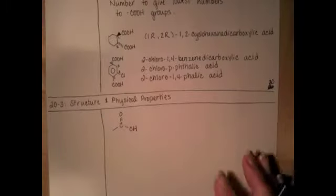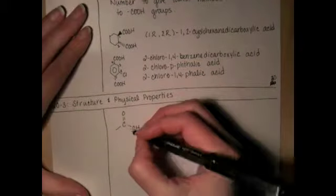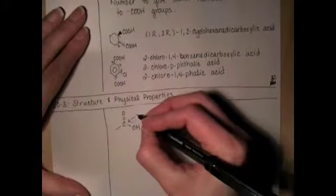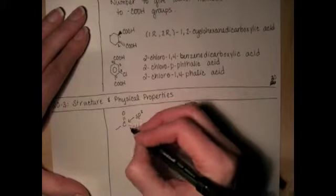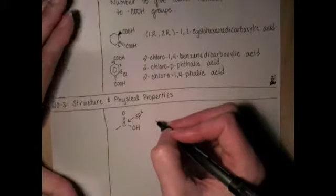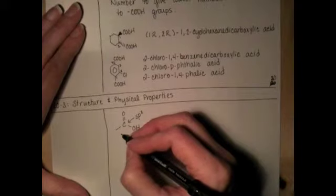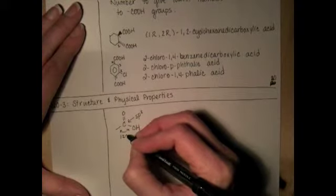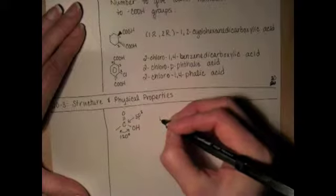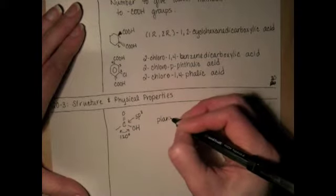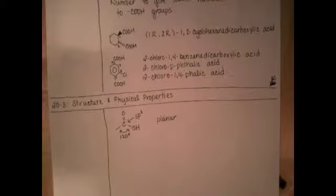First of all, looking at the geometry of the carboxyl group itself. The carbon in the carboxyl group is sp2 hybridized - it's got one, two, three areas of electrons around it, so that's sp2 hybrid. The bond angles are approximately 120 degrees because of the hybridization, and it's planar. The functional group is planar, which plays a part in its reactivity.